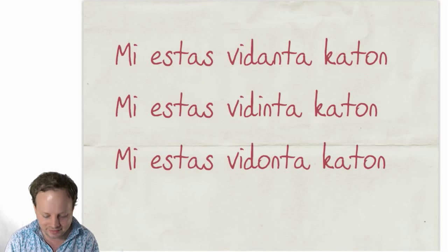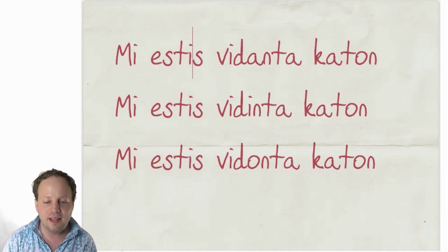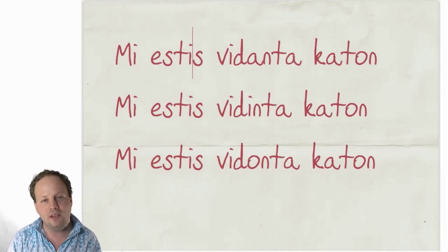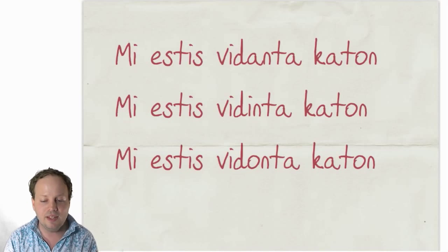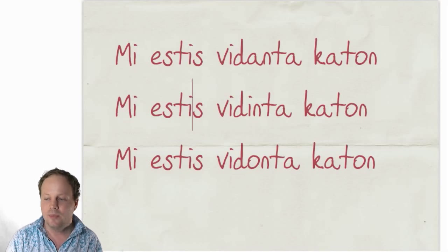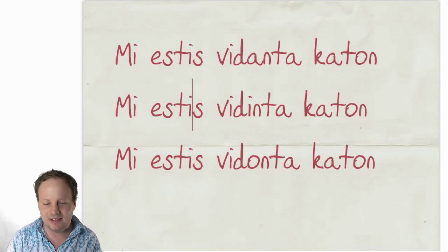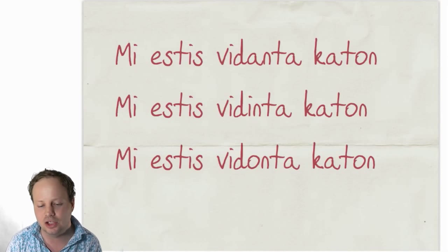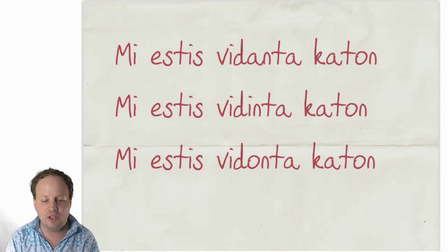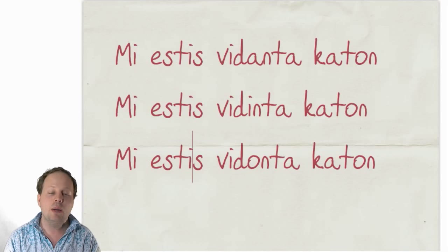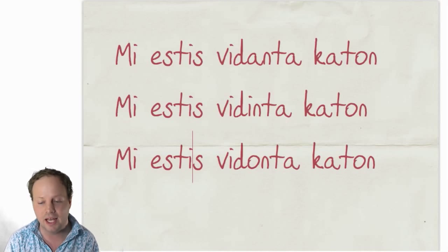But you can also change the ESTAS around. Let's put all of these into past tense. MI ESTIS VIDANTA KATON means 'I was seeing a cat.' MI ESTIS VIDINTA KATON means 'I had seen a cat' — it's hard to translate that precisely into English. MI ESTIS VIDONTA KATON means 'I was about to see a cat' or 'I was going to see a cat.'